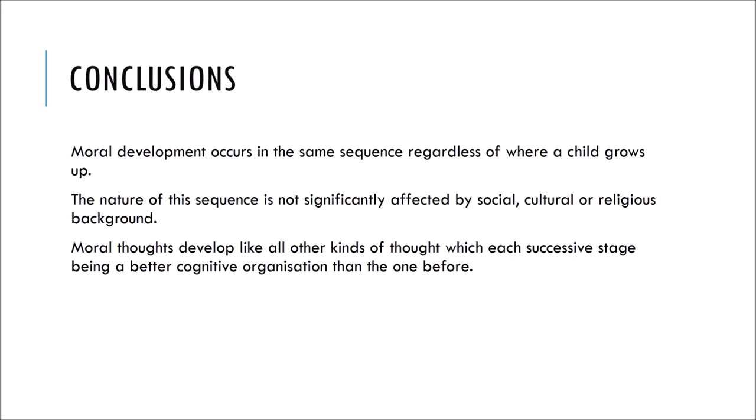The conclusions of this research are that moral development occurs in the same sequence regardless of where a child grows up. The nature of this sequence is not significantly affected by social, cultural, or religious background — all children progress through these invariant stages. Moral thoughts develop, like all other kinds of thoughts, where each successive stage is a better cognitive organisation than the one before — stage two superior to stage one, stage three to stage two, and so on.